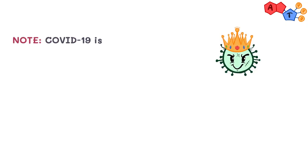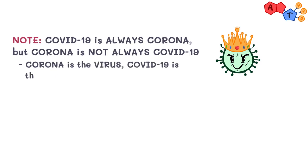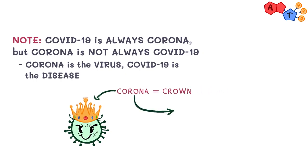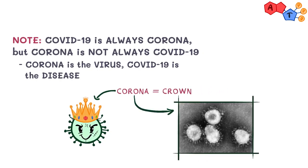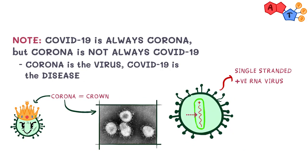Make no mistake: COVID-19 is always corona, but corona is not always COVID-19. Corona is the virus; COVID-19 is a disease. Corona in Latin means crown, and that's how corona variants look like on electron microscopy. Coronavirus is a single-stranded positive sense RNA virus. Its capsid is helical in shape, and it's covered by an envelope.